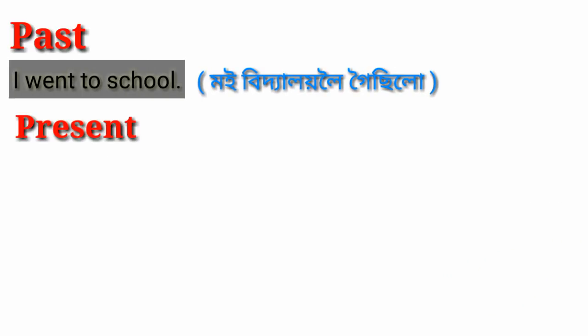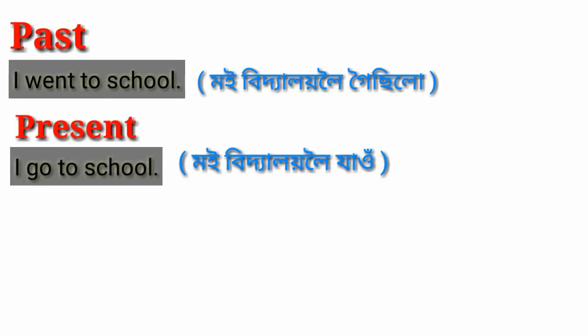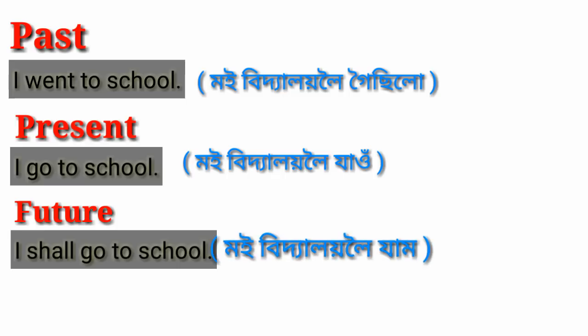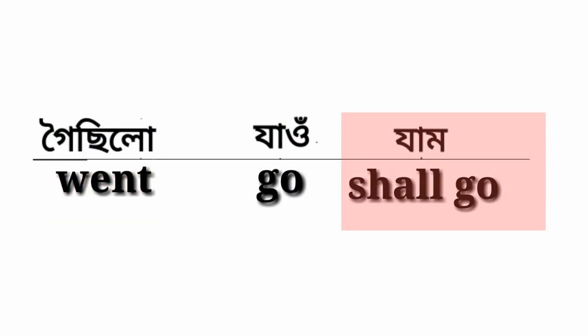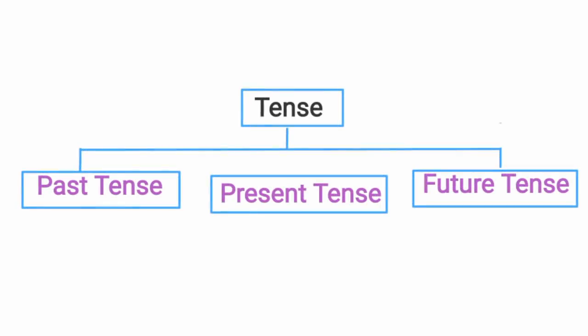For example: 'I went to school' — this is past tense. 'I shall go to school' or 'I will go to school' — this is future tense. The work is classified as present tense, past tense, and future tense.